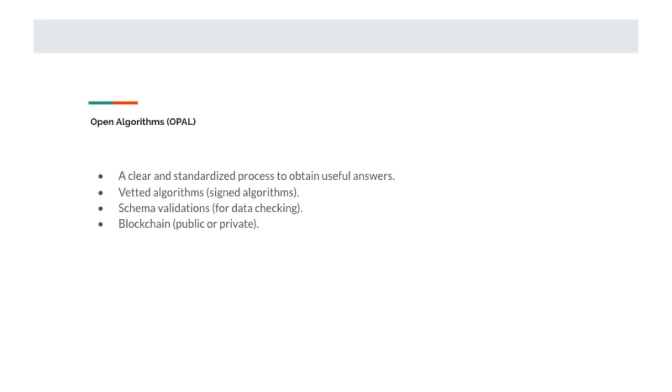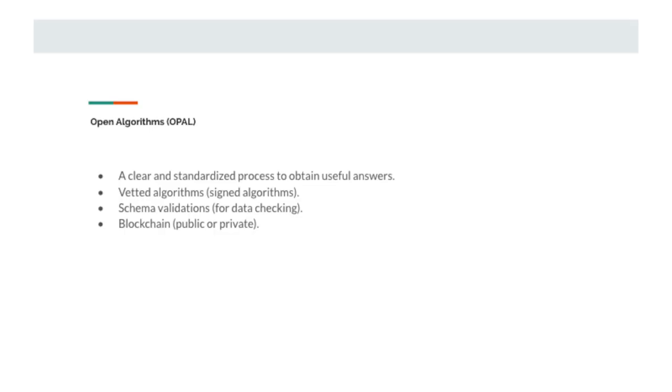We came up with a standard called OPAL, or Open Algorithms. What we're trying to do with that is basically streamline the data sharing part. We want a clear process for people to share data and also get benefits from the data. We have vetted algorithms inside the ecosystem. We have schema validation for the data that you can share. And we also have a blockchain.